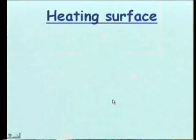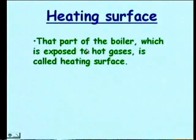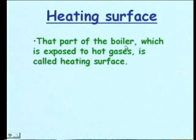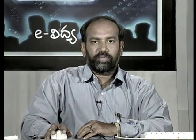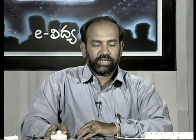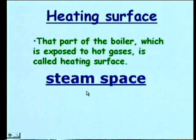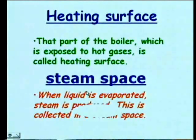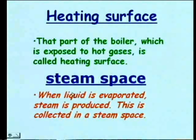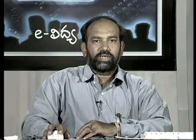The heating surface is that part of the boiler which is exposed to hot gases. The steam space is where the steam is collected: when liquid is evaporated, steam is produced, and the space where this steam is collected is called the steam space.